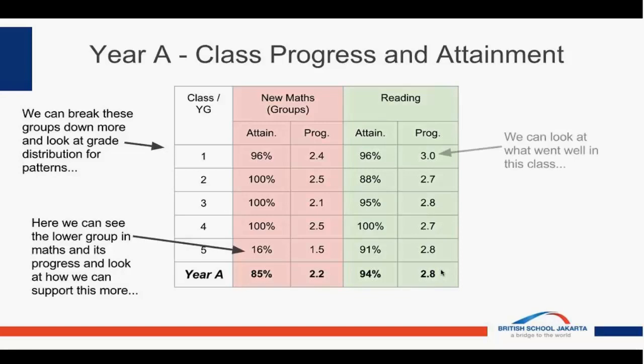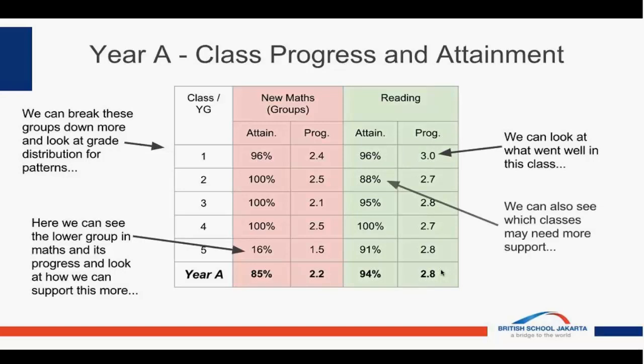We also look at what went well — classes with high levels of progress — and ask why that's happening: is it something about the individual children in the class, or the teaching methods? And for classes that might need more support, lower attainment allows us to look at the following year or term to put in extra provision. It helps us respond to the learning and support that's needed.